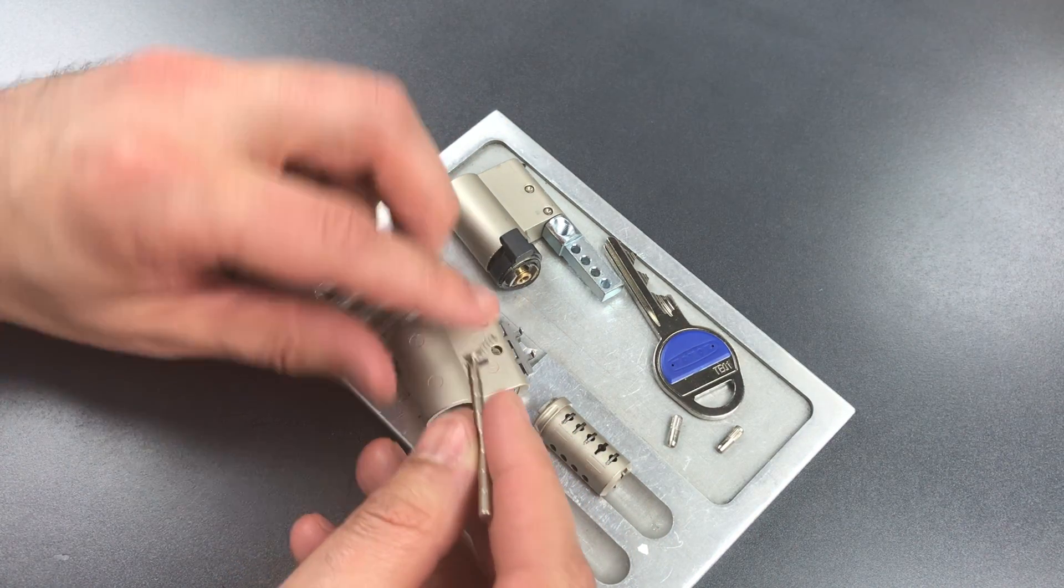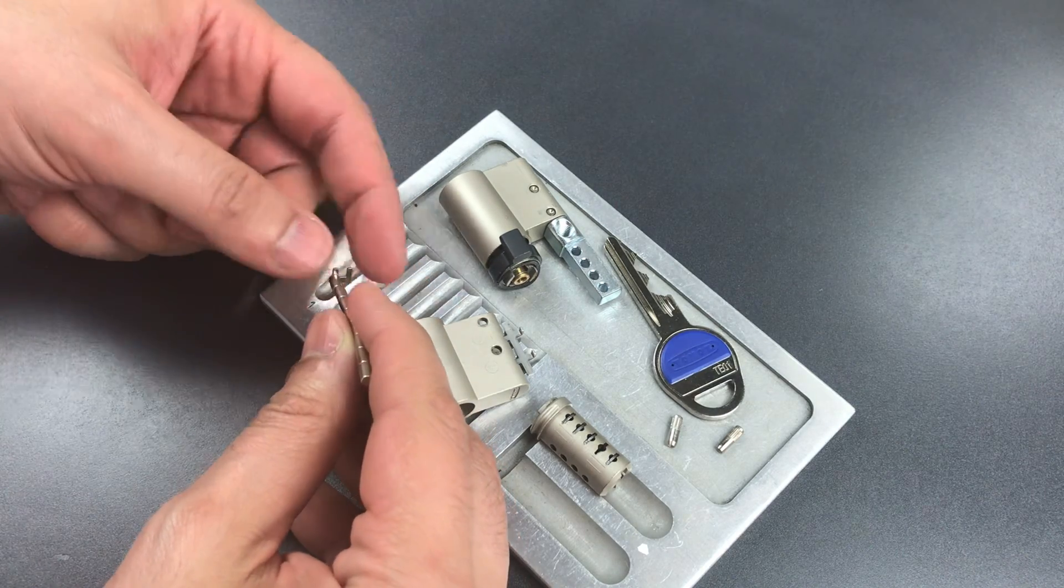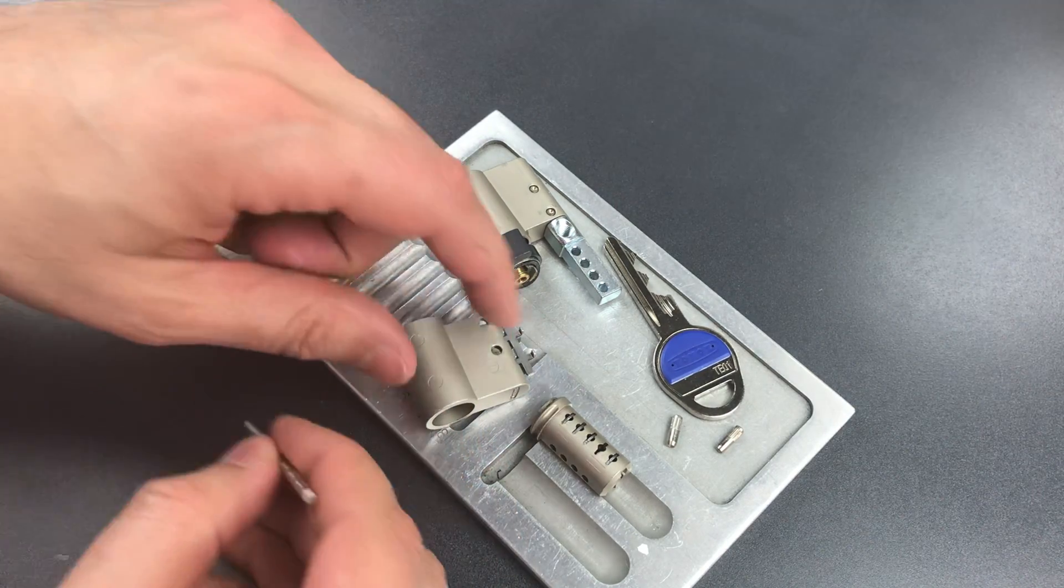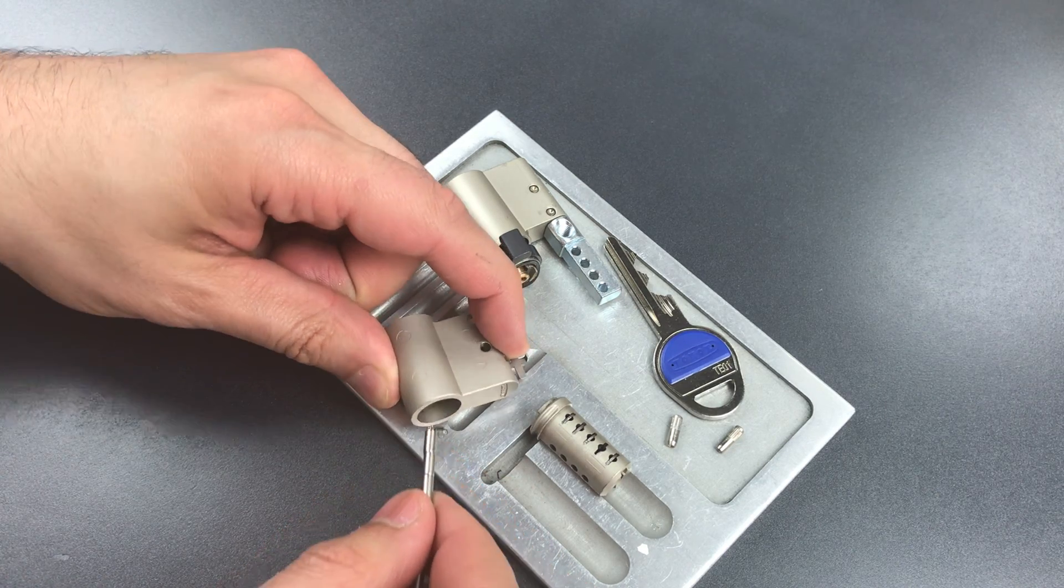Okay, this is number one. I'm going to place everything in the tray as it would be in the lock. Okay, number two, we didn't get a spring that time.